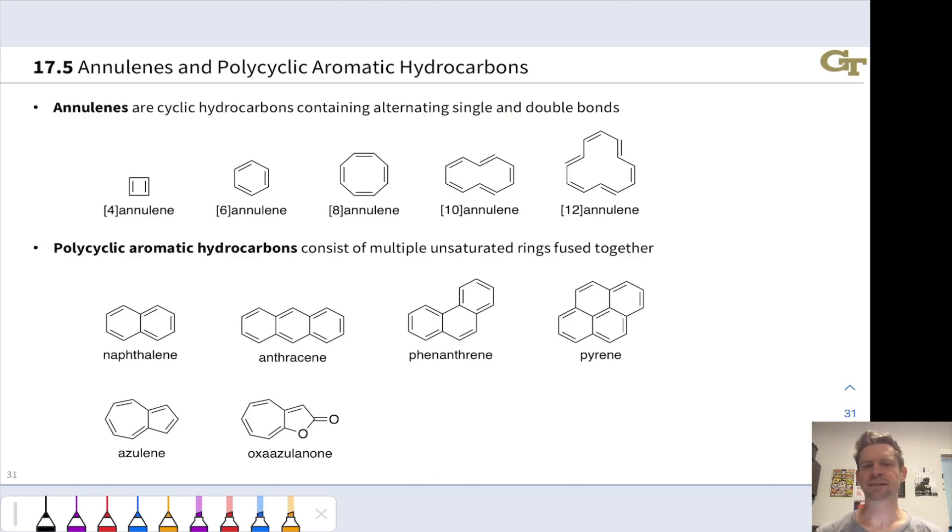Let's start with annulenes. Annulenes may be aromatic, anti-aromatic, or non-aromatic if they're in the non-planar conformation. Annulene is just a generic term for a cyclic, fully conjugated hydrocarbon consisting of alternating single and double bonds, and we put a number out in front in square brackets indicating the size of the ring.